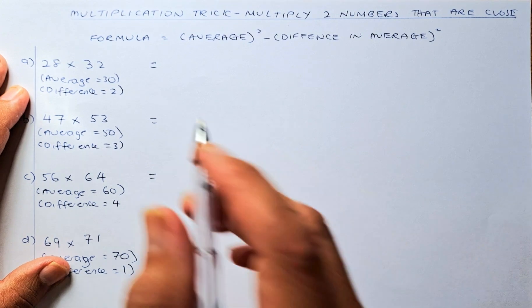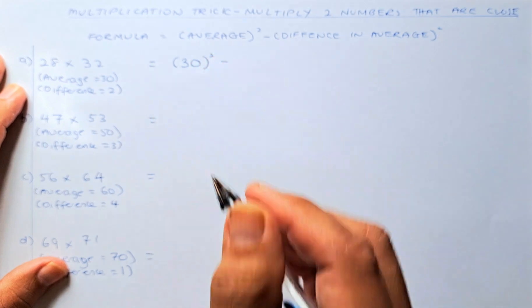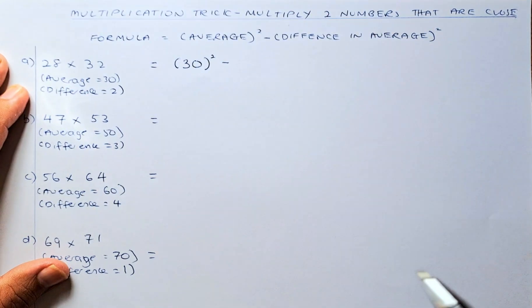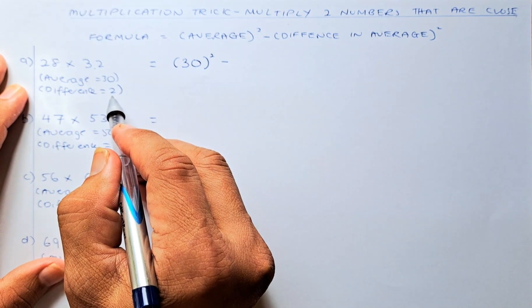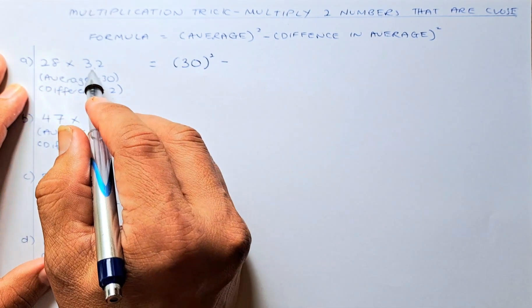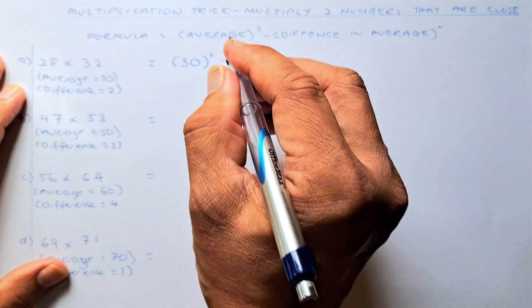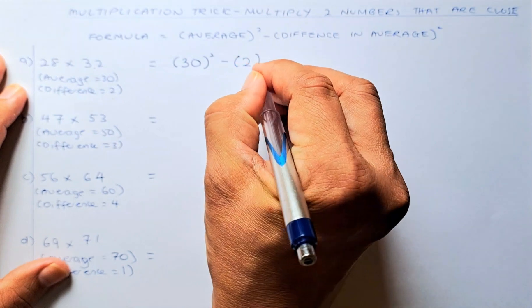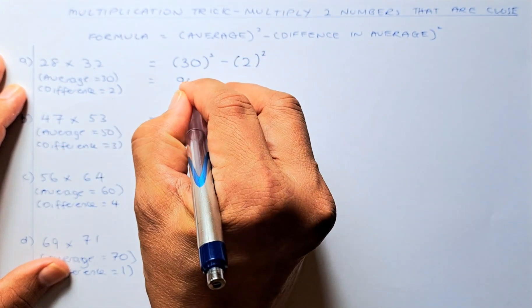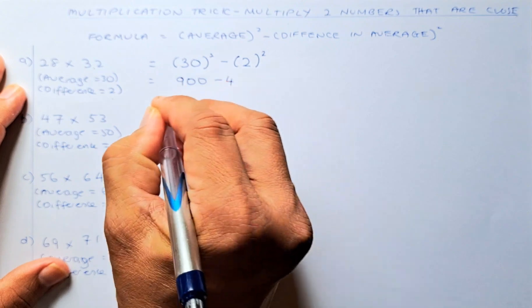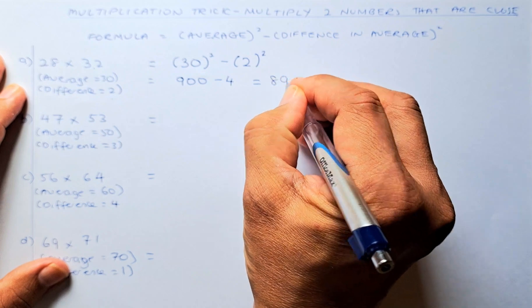The formula is average squared minus the difference in average squared. So the average is 30, so we're going to put 30 squared minus the difference of the average. The difference is 2 because 32 is 2 more than 30 and 28 is 2 less than 30. So you minus 2 squared. You get 30 squared is 900 minus 4, and the answer is 896.